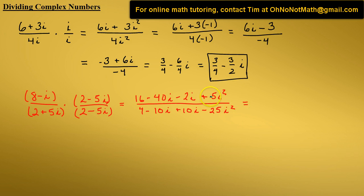And 5i times negative 5i is negative 25i squared. Now let's simplify. Let's combine like terms and plug in negative 1 for i squared.